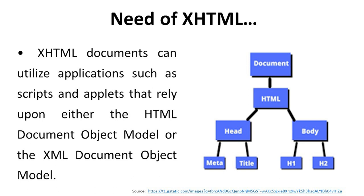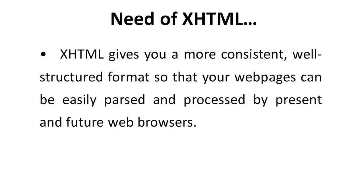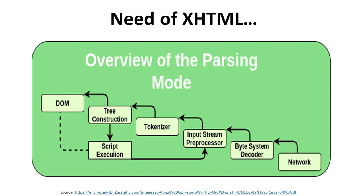In this image we see the document structure: HTML has head and body; in head we have meta and title; in body we have h1, h2, and so on as headings. XHTML gives a more consistent, well-structured format so that web pages can be easily parsed and processed by present and future web browsers. Here is an overview of the parsing mode: network byte stream goes to a decoder, then to an input stream pre-processor, then to a tokenizer, which has a tree-construction module supported by script execution, and finally produces the DOM. Script execution also feeds back to the input stream pre-processor.